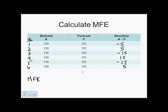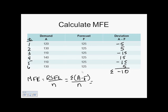Our MFE, or mean forecast error, is the running sum of the forecast errors divided by N, or the number of time periods — which is the sum of each actual minus forecasted demand divided by N. Summing the deviations: negative five plus five is zero, plus negative 15 is negative 15, plus 15 is back to zero, minus 15 is negative 15, plus five is negative 10. So our numerator, the RSFE, is negative 10, divided by six time periods.